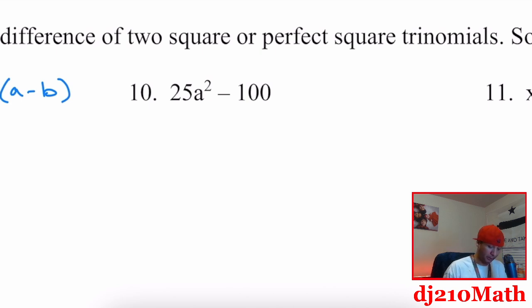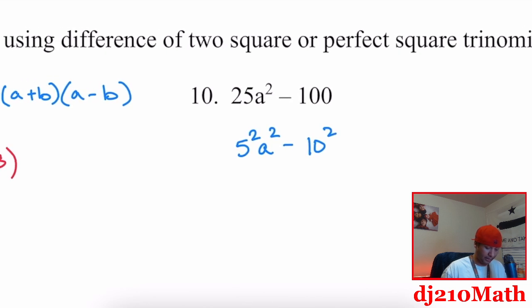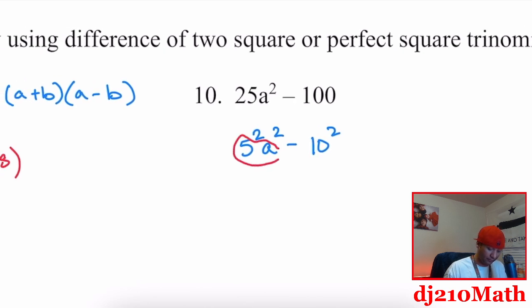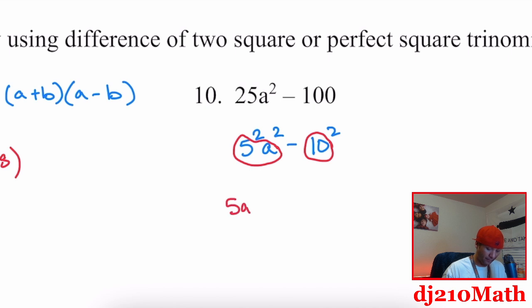Number 10 or 11: 25A squared minus 100. So 25 is 5 squared and 100 is 10 squared. Here A is 5A and B is 10, so we go straight to the formula: 5A plus 10 times 5A minus 10. If there's a coefficient in front of the leading term, just write it as a square.